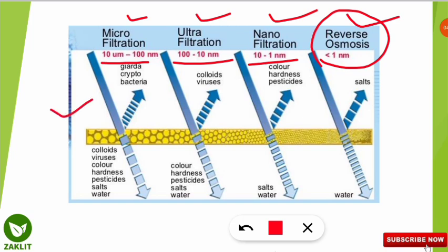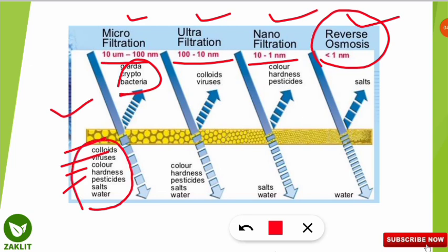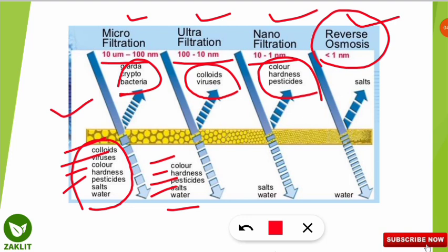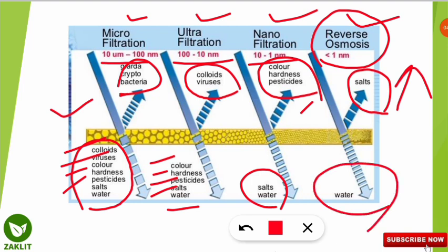In microfiltration, Giardia, Cryptosporidium, and bacteria are separated, but colloids, viruses, color, hardness, pesticides, and salts remain. In ultrafiltration, colloids and viruses are also eliminated, but color, hardness, pesticides, and salts are still present. In nanofiltration, color, hardness, and pesticides are removed, but salts remain. Finally, in reverse osmosis, salts are mostly eliminated and we get purified water.